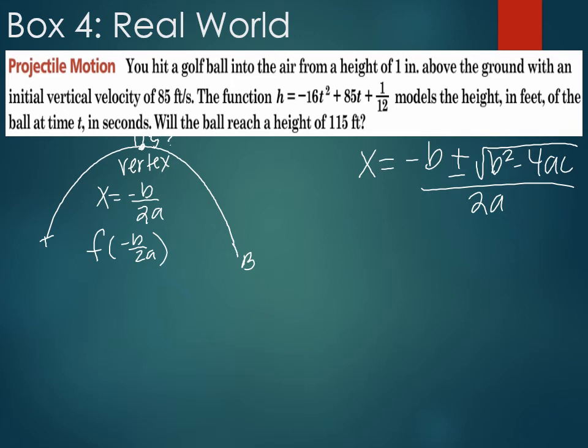Option number two is now setting this equal to 115 and determining if I actually exist between there. Our option number two is saying I have 115 as my ideal height. Will I get there? And now I can use the discriminant. But in order to use the discriminant, what does this need to be equal to? Zero. So how can I make this equal to zero? Subtracting the 115.